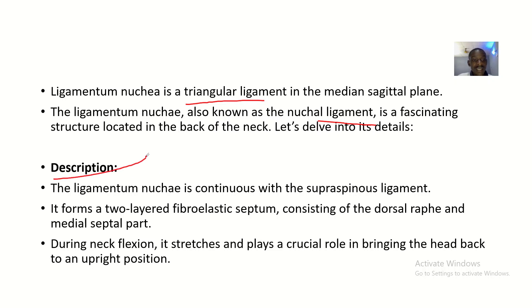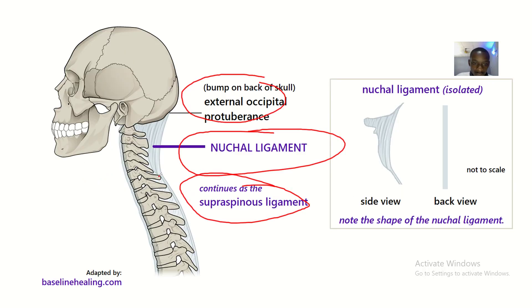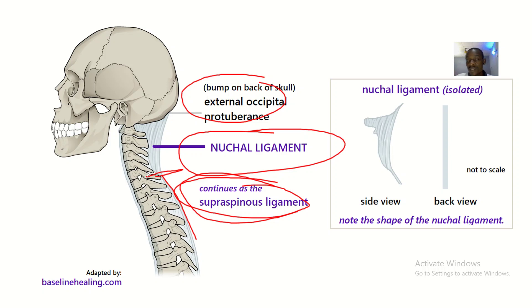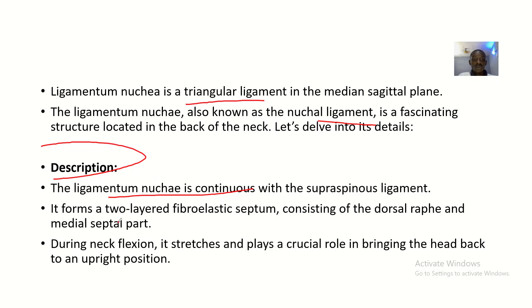The ligamentum nuchae is continuous with the supraspinous ligament. The ligamentum nuchae comes to an end at the C7 vertebra, while the supraspinous ligament starts from the C7 vertebra going downward. So it is continuous with the supraspinous ligament.